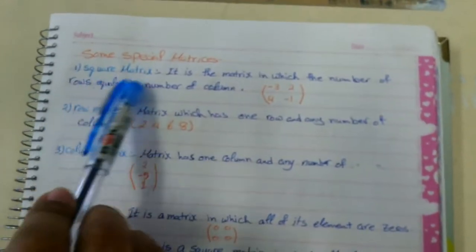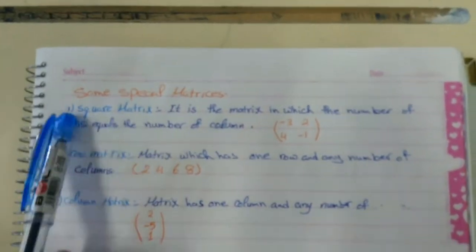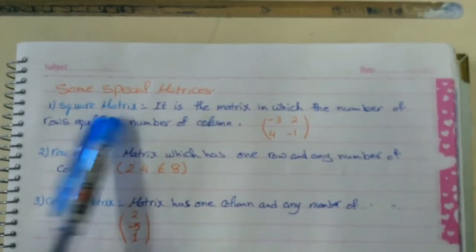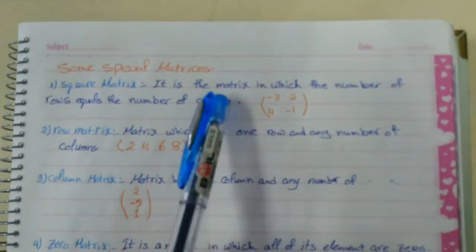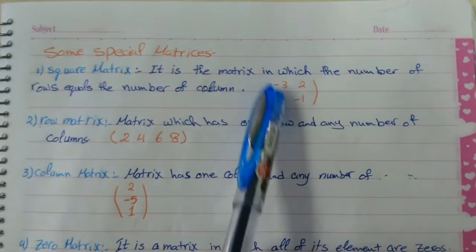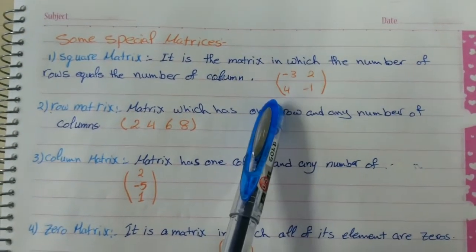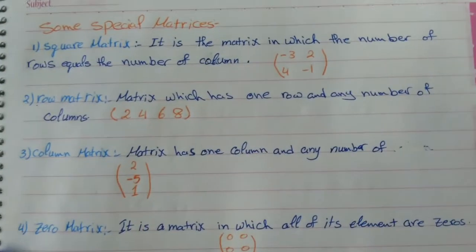We have special matrices. The first one is square matrix. When we can say that this is called square matrix, when the number of rows equals the number of columns. You have two rows and you have two columns. So this is ordered 2 by 2. We call it square matrix.